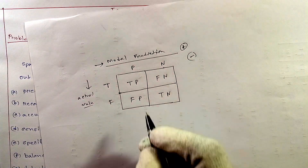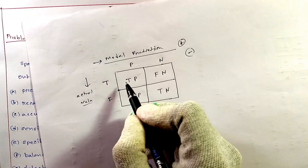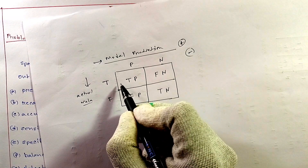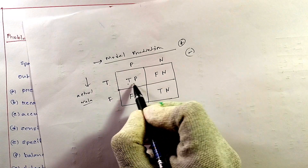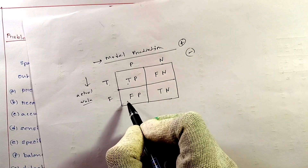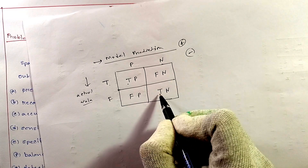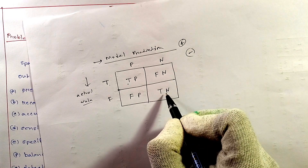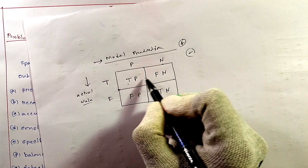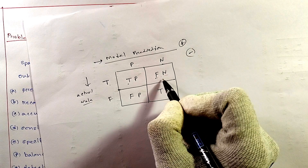This case may be a little confusing because according to this concept T and P, we should put TP; F and P, we should put FP; F and N, we should put FN — but this last one is TN. So we put here TN.